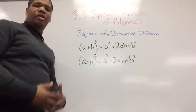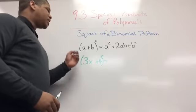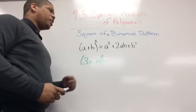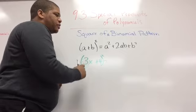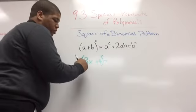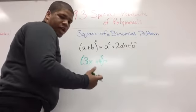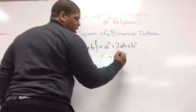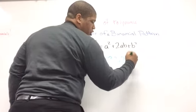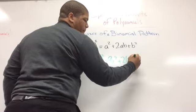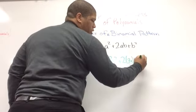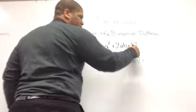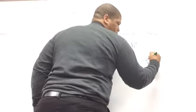As an example for the (a + b) squared pattern, I have (3x + 4) squared. The first thing I'm going to do is square my a, which is 3x — so 3x times 3x gives me 9x squared. Then I'm going to do plus 2 times 3x times 4, because 3x is my a and 4 is my b, plus b squared which is 4 squared, and that's 16.